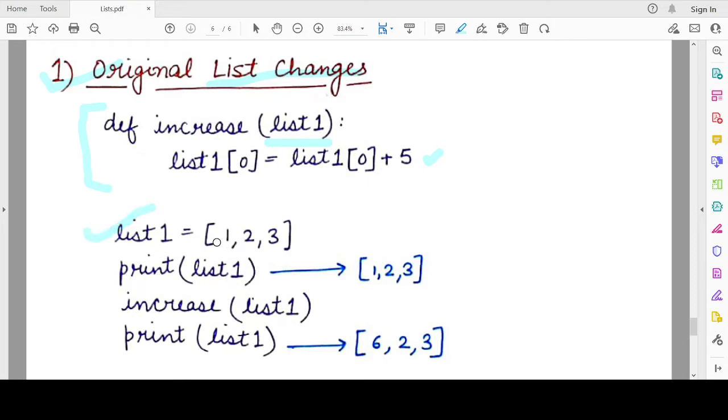What are the contents of the list? The list has three elements 1, 2, 3. When I first print the value of list1, it gives me 1, 2, 3. Then I call the increase function with the argument as list1. Inside the function, this particular statement gets executed. When this statement gets executed, the first element which was initially 1 gets changed to 6.